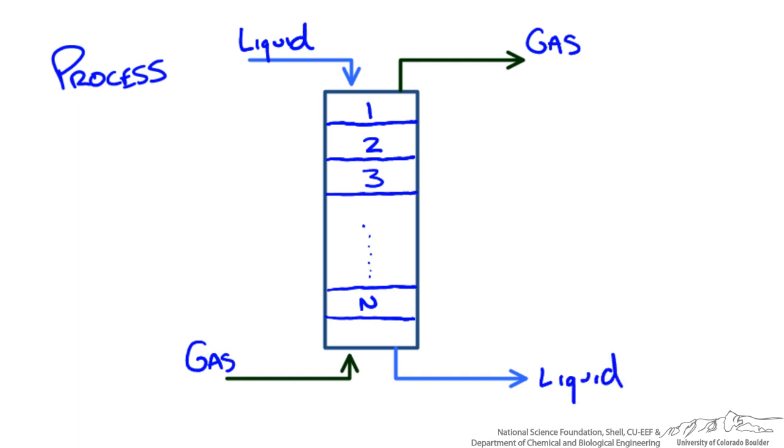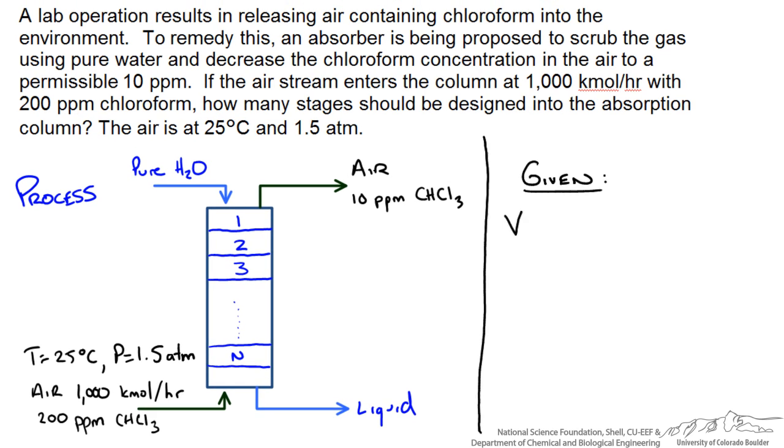Let me fill in some details that we know. We are given a vapor flow rate of 1000 kmol an hour. We are given an inlet concentration of 200 parts per million which is a mole ratio but since we are working with really dilute solutions we could write it as a mole fraction. So our mole fraction of chloroform entering is 200 parts per million. We are also told that the concentration leaving needs to be 10 parts per million. Since we are using pure water we know that the concentration coming in of chloroform in the water stream is 0 and that is all we are given.